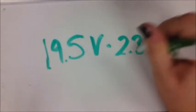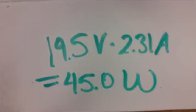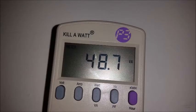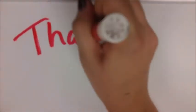So, voltage at 19.5 volts times current at 2.31 amps, the result is 45 watts, which gives a good estimate as measured with a kilowatt meter having 48.7 watts. Thank you and I hope you enjoyed this video.